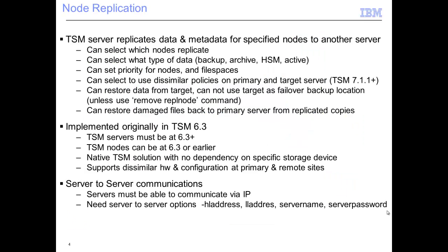When setting up node replication on the source server, you need to select which nodes replicate and the type of data: backup data, archive data, HSM data, or active-only data. You need to set up priority for the nodes and file spaces that are going to replicate. You also need to decide whether to use dissimilar policies on the primary and target server, which is valid as of TSM 7.1.1 and above, and whether to set up the restoration of damaged files, also a TSM 7.1.1 and above feature.